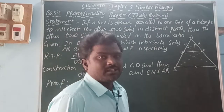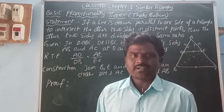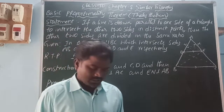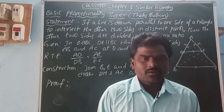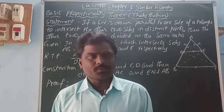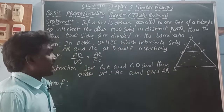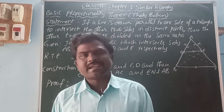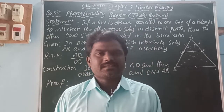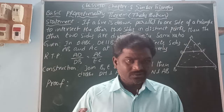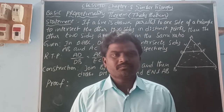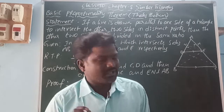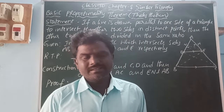Proportion means what? Any two ratios are equal — one ratio is equal to another ratio. Ratio means what? Comparison. Comparison between any two quantities with the same units is called ratio. Similar triangle means what? The two triangles having the same shape but different size. From the size comparison, we can get one constant value. That constant value is called scalar factor. The ratio of the corresponding sides is constant.